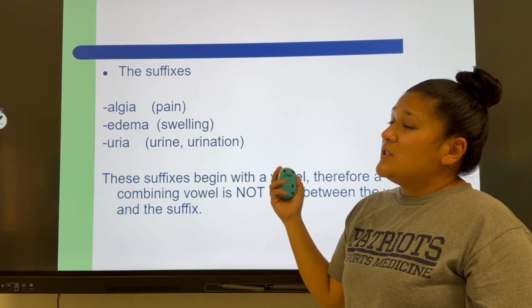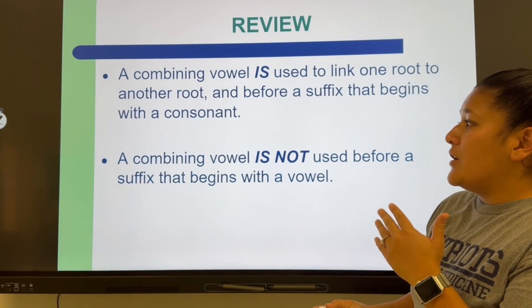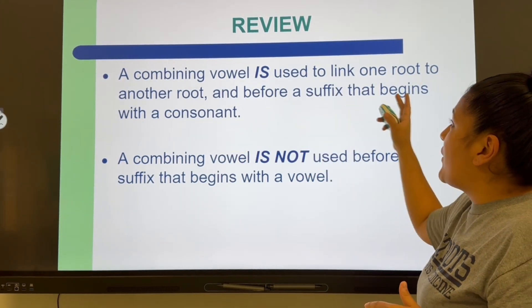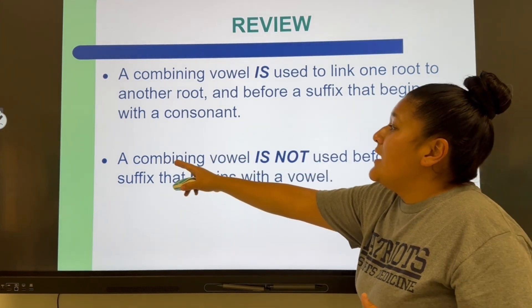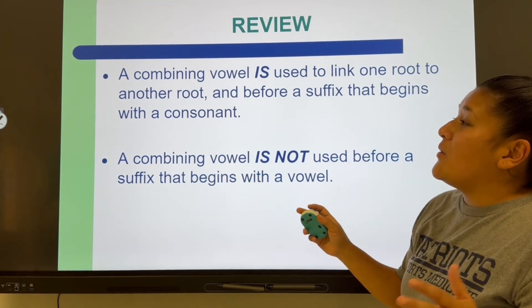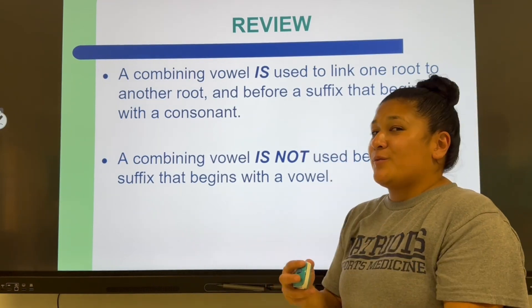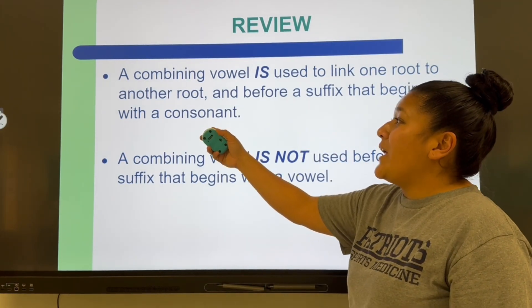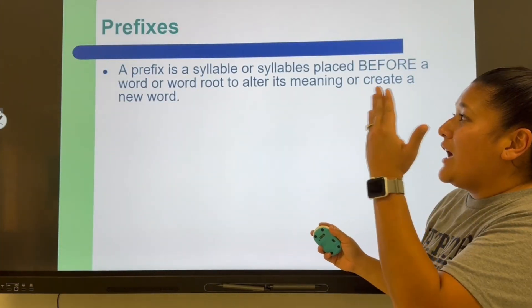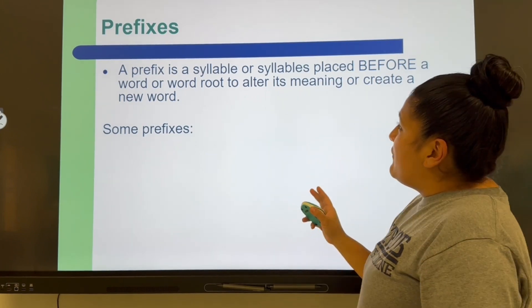Additional suffixes: -algia means pain, -edema means swelling, and -uria means urine or urination. Regarding combining vowels: a combining vowel is used to link one root to another root, or before a suffix that begins with a consonant. A combining vowel is not used before a suffix that begins with a vowel. That's the rule for when to use the combining form — it's harder to notice at first, but will become clearer as we dissect words.